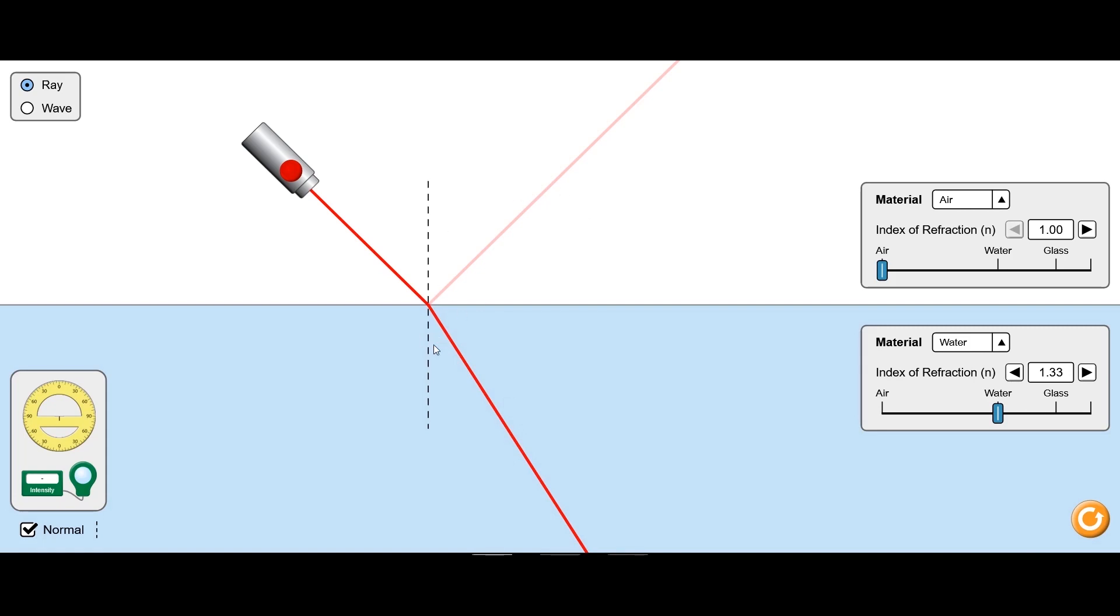So this dotted line here in the middle is called the normal. It's called the normal because it's at a normal to the surface, which is a fancy way of saying it's at a right angle.